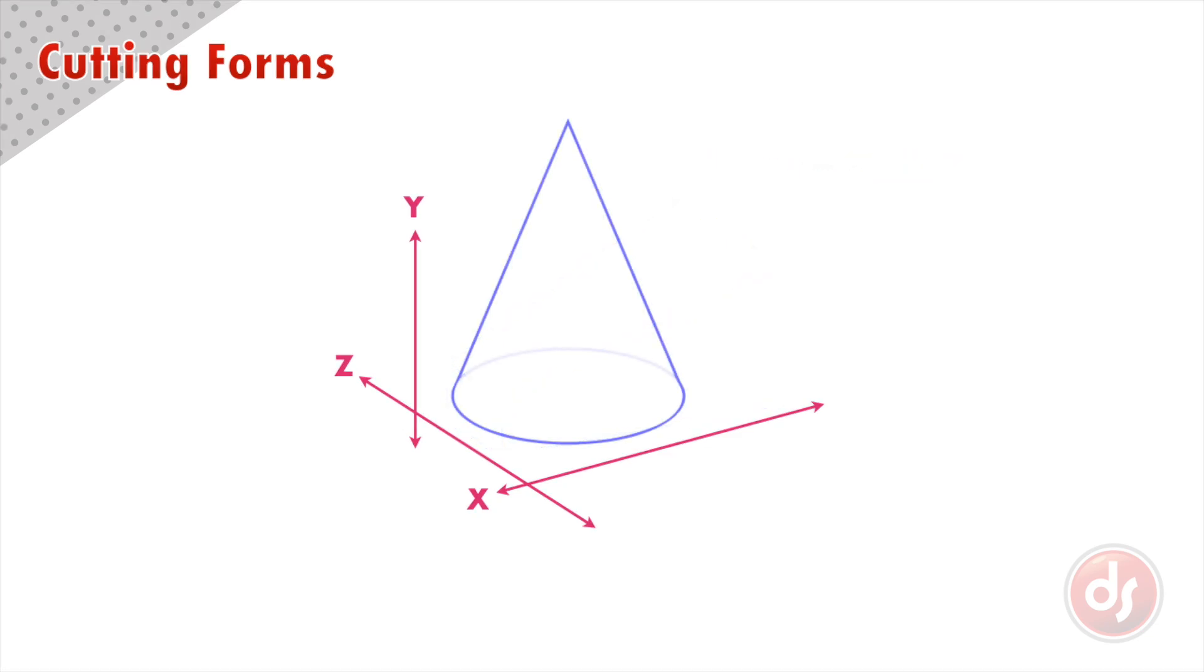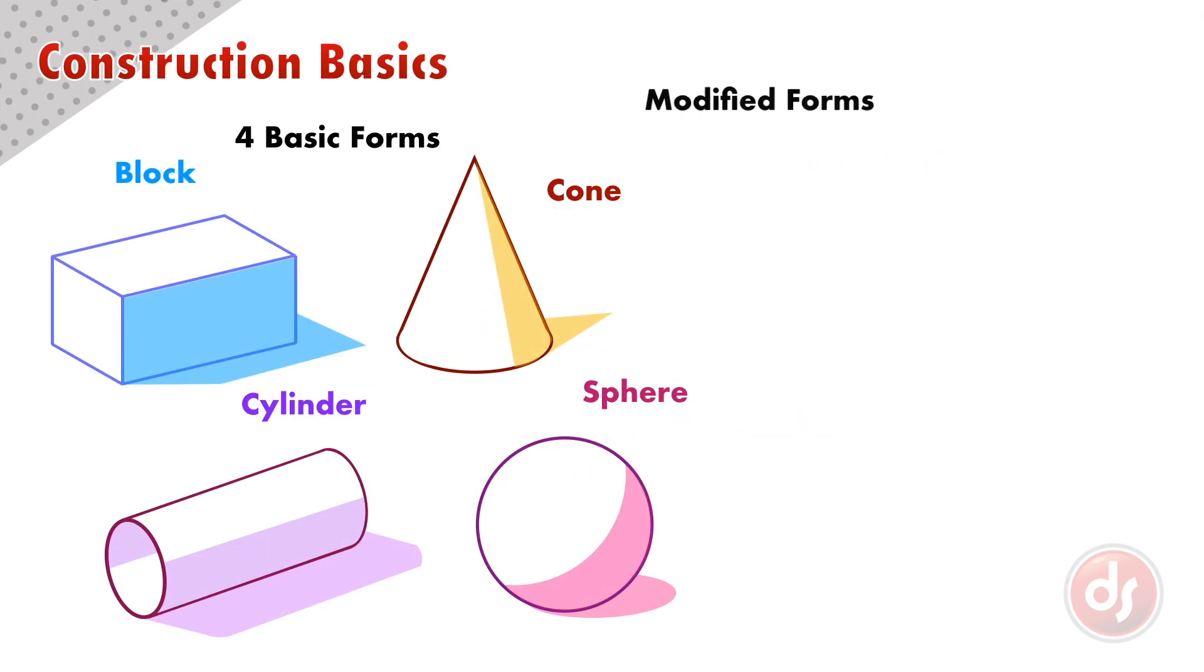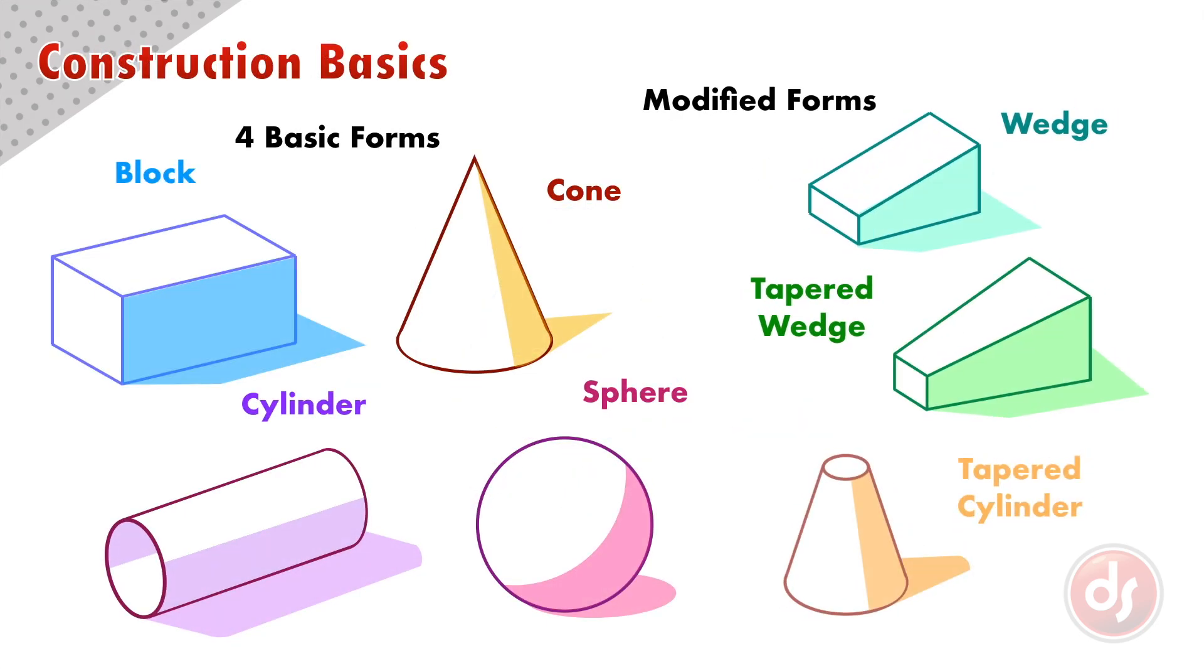Let's do something similar to a cone. By simply cutting the top section off of it we have made a slightly more complex form called a tapered cylinder. We can add these modified forms to our list of basic forms. We will utilize all of these forms in construction drawing.